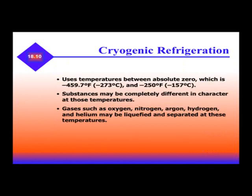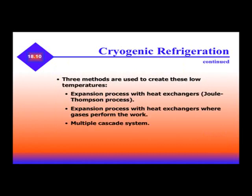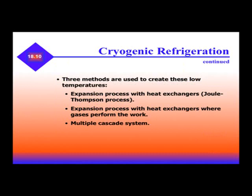Cryogenic refrigeration uses temperatures between absolute zero, which is negative 459.7 degrees, and negative 250 degrees. Substances may be completely different in character at those temperatures. Gases such as oxygen, nitrogen, argon, hydrogen, and helium may be liquefied and separated at these temperatures. Three methods are used to create these low temperatures: an expansion process with heat exchangers, an expansion process with heat exchangers and gases, and multiple cascade systems.